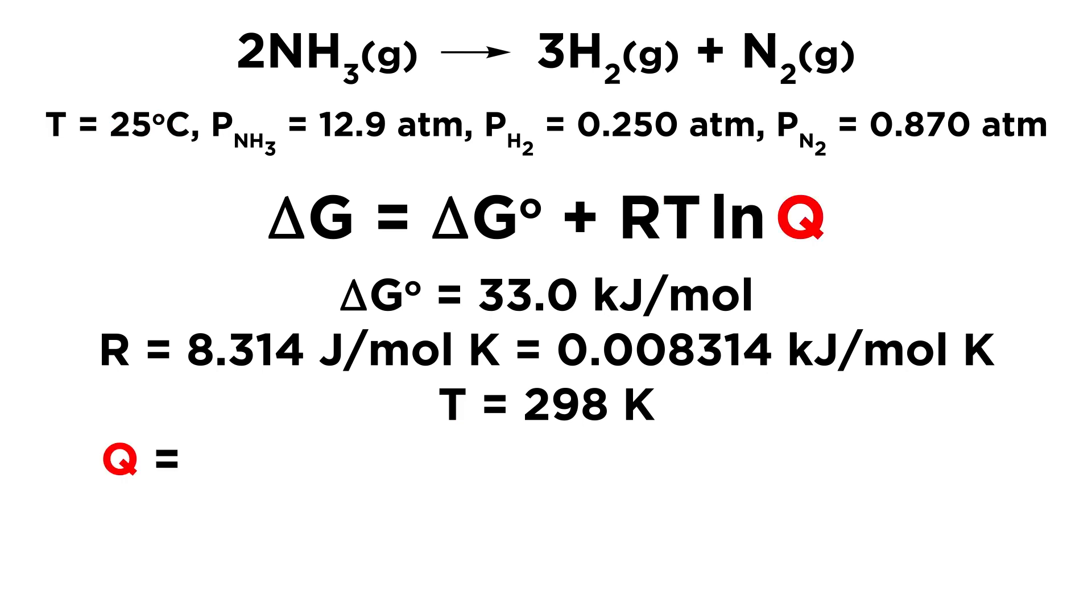Now for Q, that's the reaction quotient. So that is going to be equal to the concentrations of the products raised to the powers of their stoichiometric coefficients divided by the concentration of the reactants raised to the powers of their stoichiometric coefficients. So here, rather than concentrations, we can just use pressures. And so let's take the pressure of H₂, which is 0.250, and let's raise it to the third power because we have 3H₂. And let's multiply by the value for N₂, which is 0.870. And then we will divide by the value for NH₃, which is 12.9, and we will square that because we have 2NH₃ in the equation.